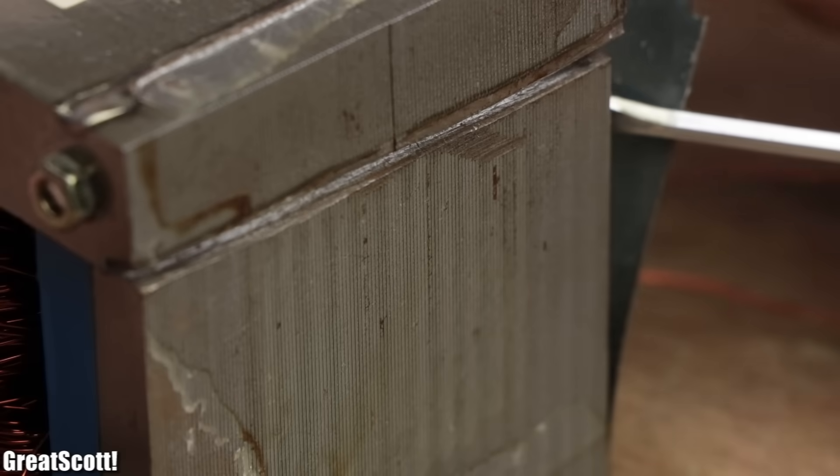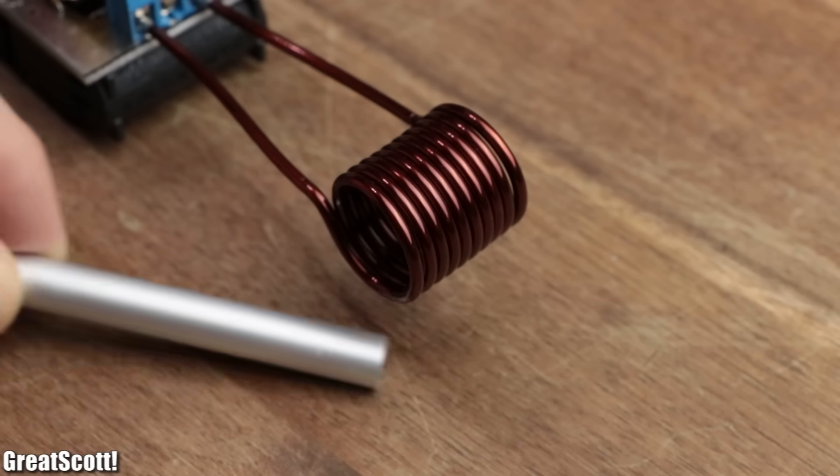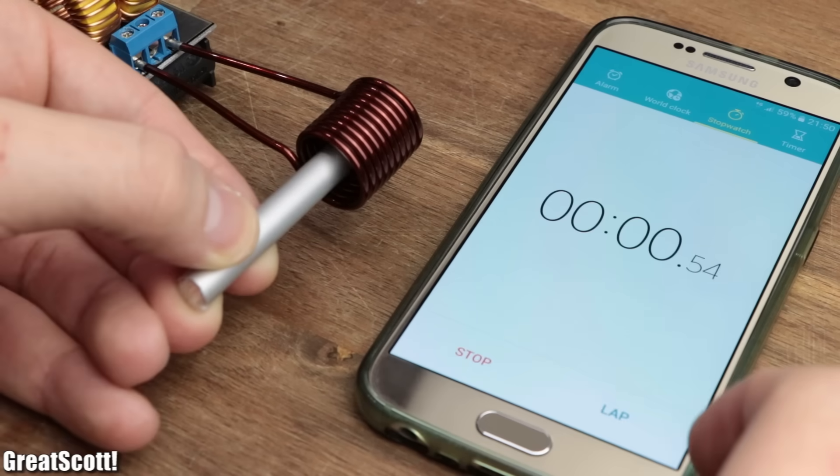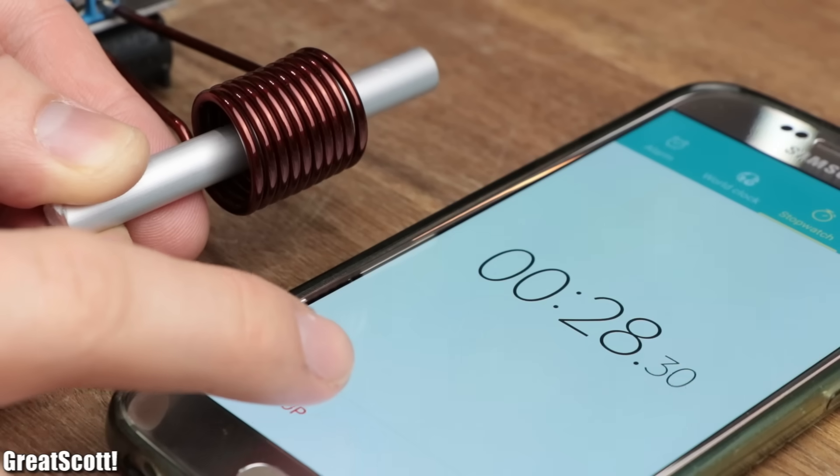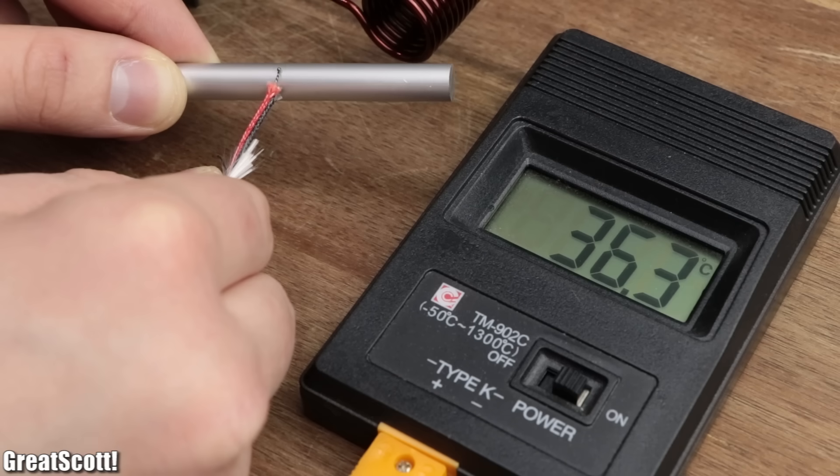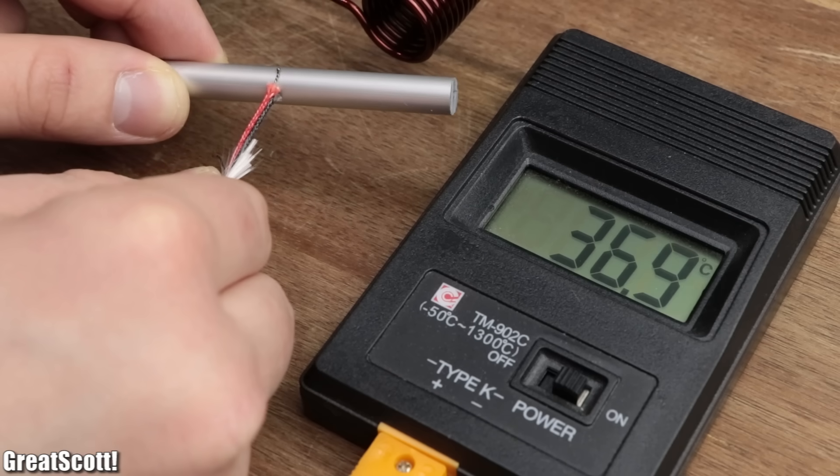But let's focus on the aluminum and let's add a timer to the experiments. After 30 seconds inside the coil, the material reached a temperature of 37 degrees Celsius.